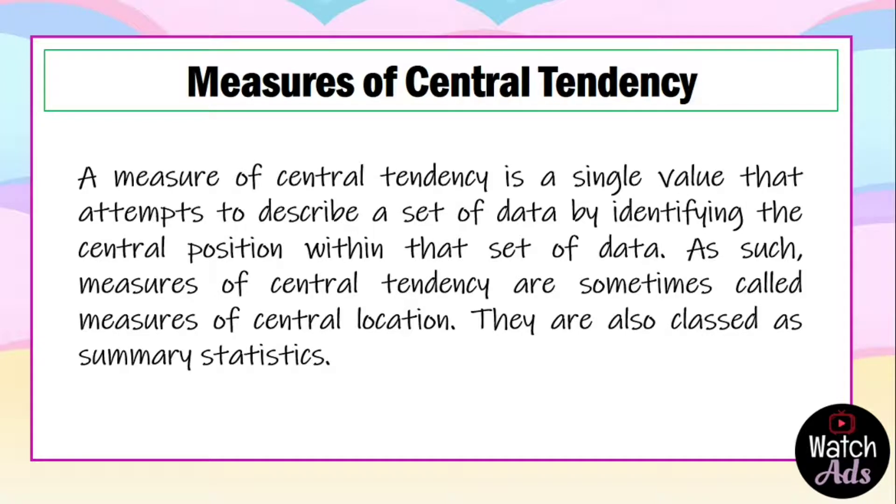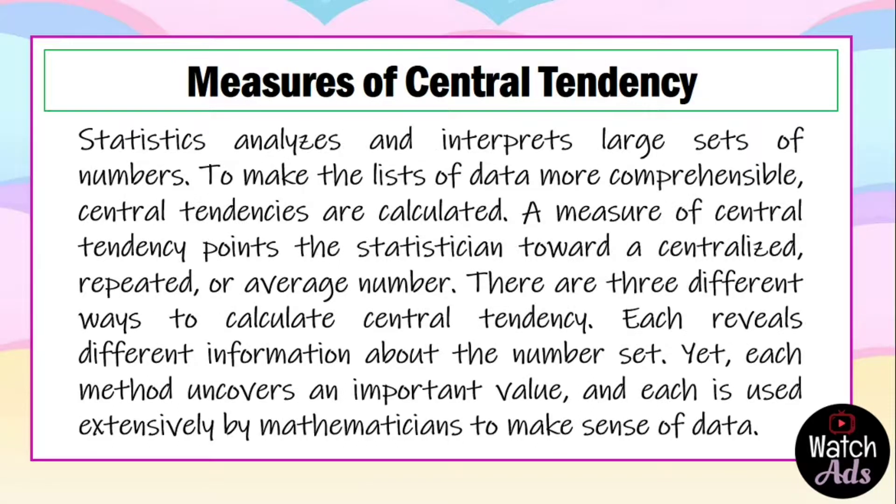A measure of central tendency is a single value that attempts to describe a set of data by identifying the central position within that set of data. As such, measures of central tendency are sometimes called measures of central location. They are also classed as summary statistics. Statistics analyzes and interprets large sets of numbers to make lists of data more comprehensible. Central tendencies are calculated. A measure of central tendency points the statistician towards a centralized, repeated, or average number. There are three different ways to calculate central tendency. Each reveals different information about the number set, yet each method uncovers an important value and each is used extensively by mathematicians to make sense of data.